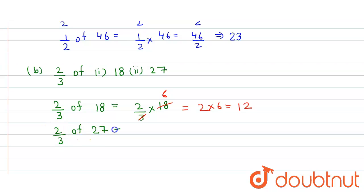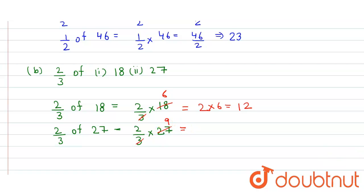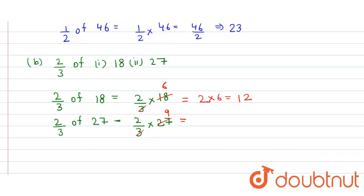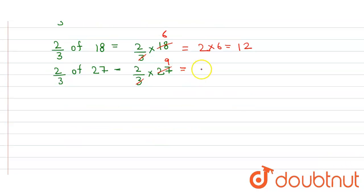And here we get 12. Now 2/3 of 27 equals 2/3 into 27. This 3 cancels with 27 and here we get 9, so that will be equals to 2 into 9, which equals 18.